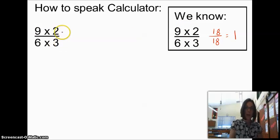Now we're going to try putting this into the calculator, and I call this how-to-speak calculator because we know it's 1. We have to see if we can get that into the calculator so that the calculator understands that it's 1. Most people want to put 9 times 2, and then they want to say divided by 6, and then the 6 is times 3, so they would do that.